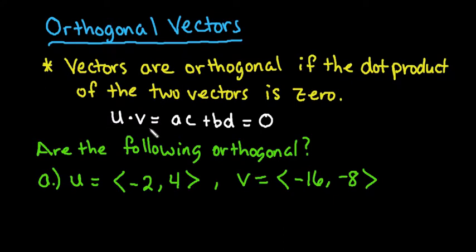Remember, the dot product u·v is equal to the product of the two x coordinates plus the product of the two y coordinates. If the sum is equal to zero, then you can say that yes, they are orthogonal.